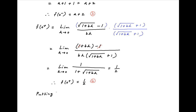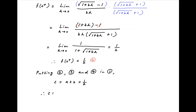Using results 2, 3, and 4 in condition 1, we get c = a + 2 = 1/2. Therefore, to summarize: c = 1/2 and a = 1/2 − 2 = −3/2. And b is any real number, which is the required answer.